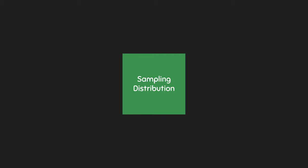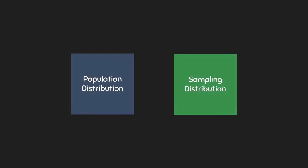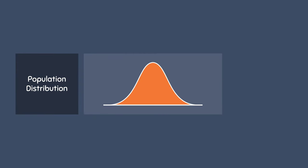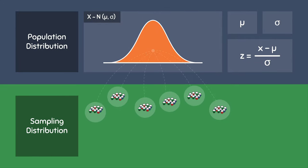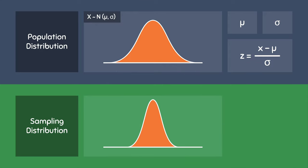So now that you know what a sampling distribution is, let's compare the difference between a population distribution and a sampling distribution. A population distribution has a mean of mu and a standard deviation of sigma. And when a random variable x follows a normal distribution with a mean mu and a standard deviation sigma, this can be represented by the following notation. The standardization formula for this normally distributed population would be equal to an observation x minus the population mean mu, divided by the population standard deviation sigma. For the sampling distribution, this is created by taking multiple random samples from the original population, then calculating the x-bar for each sample, and combining it into one graph. When we do this, we find that the population mean of all the x-bars is actually equal to mu. In other words, the mean of the sampling distribution is equal to the mean of the original population distribution that you sampled from.